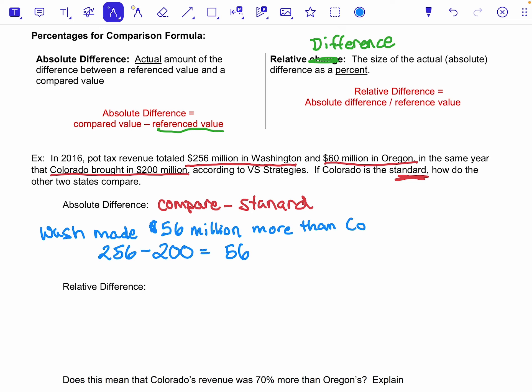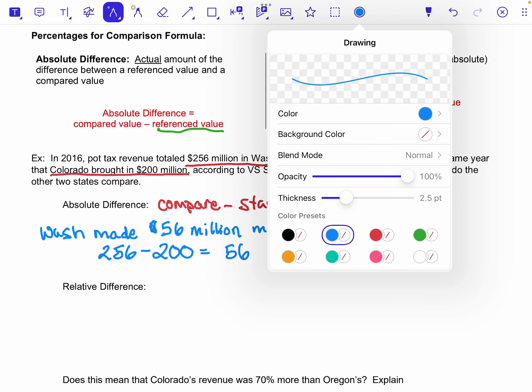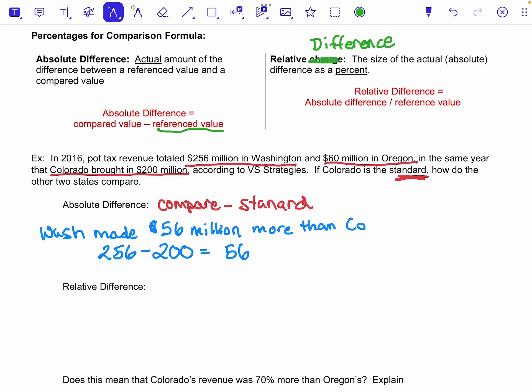Now, I then did the same thing with Oregon. So let's switch colors here, we're going to do green for Oregon. So for Oregon then, I would have the $60 million minus the $200 as my standard.